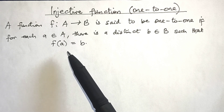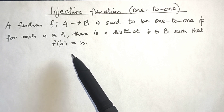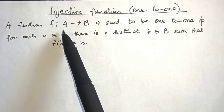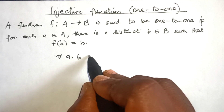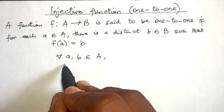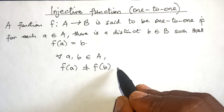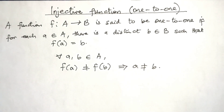In other words, the function f is one-to-one if different elements in B are assigned to different elements in A — that is, if no two different elements in A have the same image. We say that f is one-to-one if for every a, b in set A, f(a) ≠ f(b) implies a ≠ b.